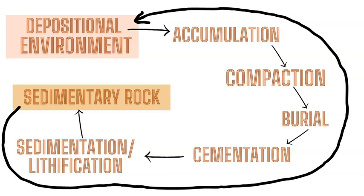The importance of understanding a depositional environment comes from understanding how sedimentary rocks form through sedimentation and lithification. Sediment accumulates and is deposited in a certain location — such as a flood plain, shallow sea, or deep marine ocean floor. Then compaction, burial, and sedimentation with heat and pressure change certain minerals into a rocky glue that cements the sediments together, forming sedimentary rock.